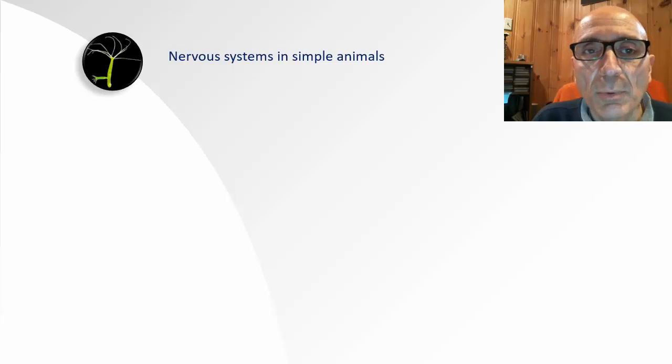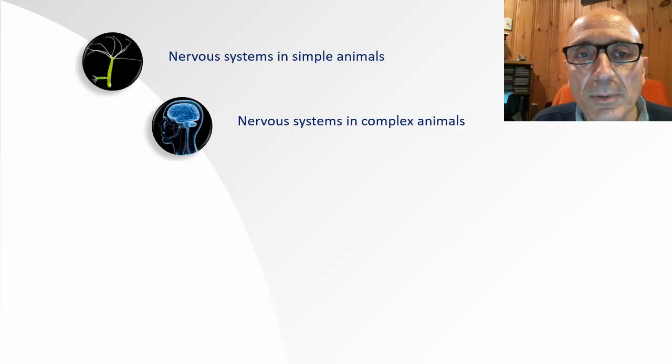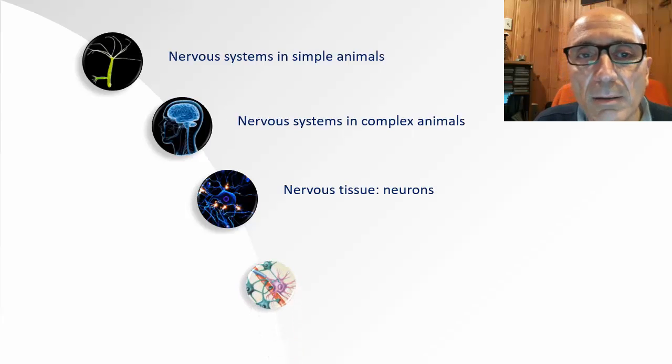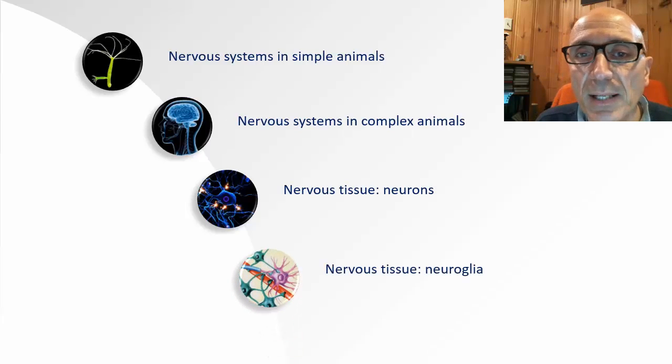In this first lesson we will look first at the organization of the nervous system in simple animals, then in complex animals. We will then take a look at the main cellular components of the nervous system, namely nerve cells or better known as neurons, and then neuroglia, which are a variety of cells that act as support systems for neurons.